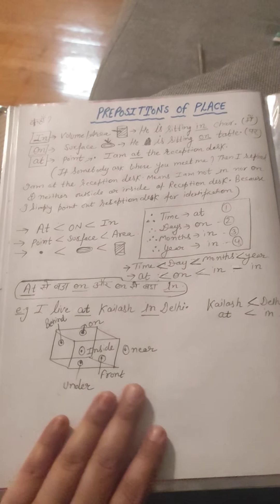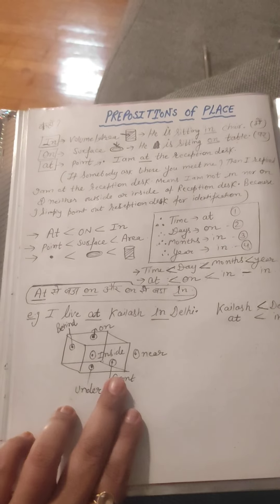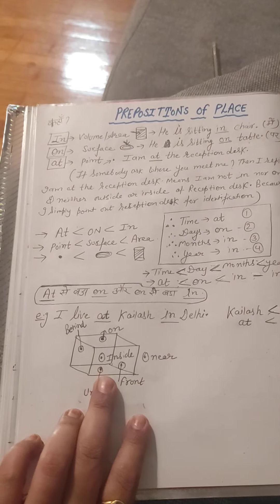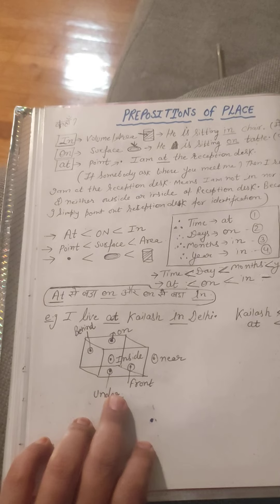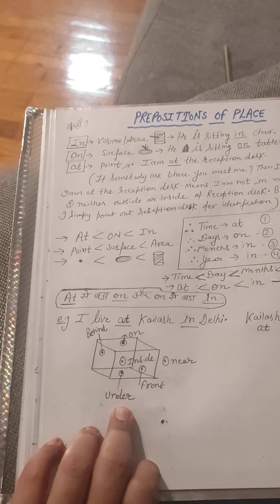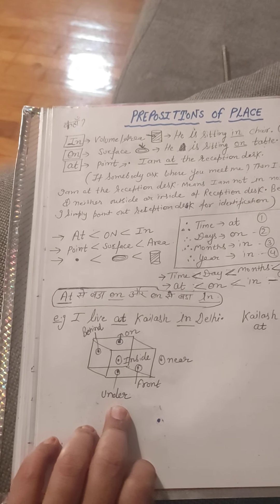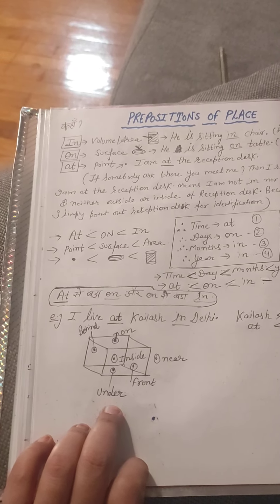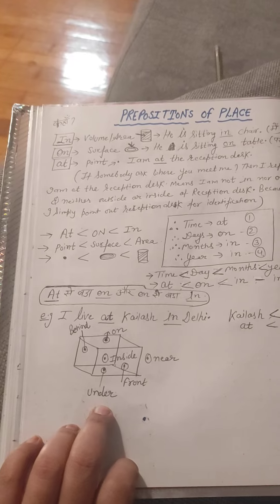We use prepositions with box. For example: behind, on, inside, near, front, under.